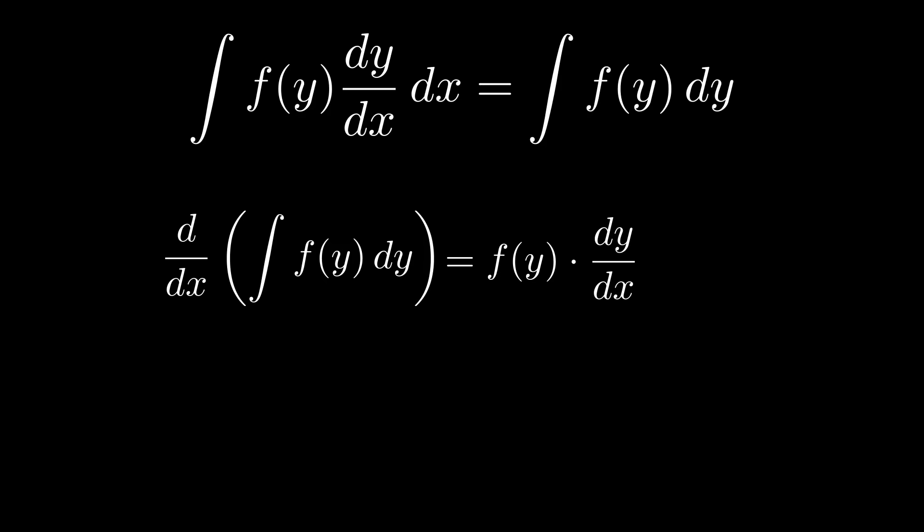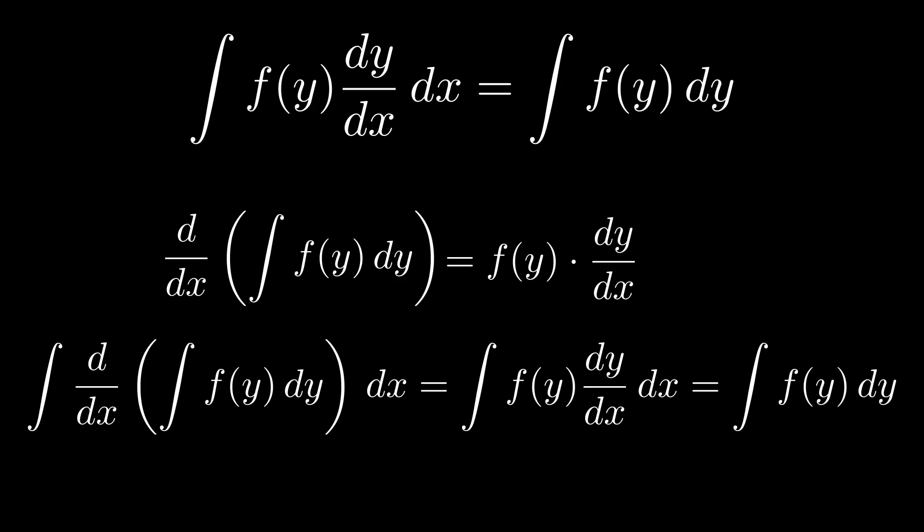And the only thing to do now, to get what we want, is integrate both sides with respect to x. You might notice that the f of y dy over dx, when integrated with respect to x, is the situation we're trying to simplify. The other side is a little bit clunky, but simplifies rather nicely. And although it's a little convoluted, it's actually a really similar thing happening here. We're basically integrating, with respect to x, the derivative with respect to x. And those should cancel each other out. Basically, we're just ending up with the integral of f of y dy equaling what we want.